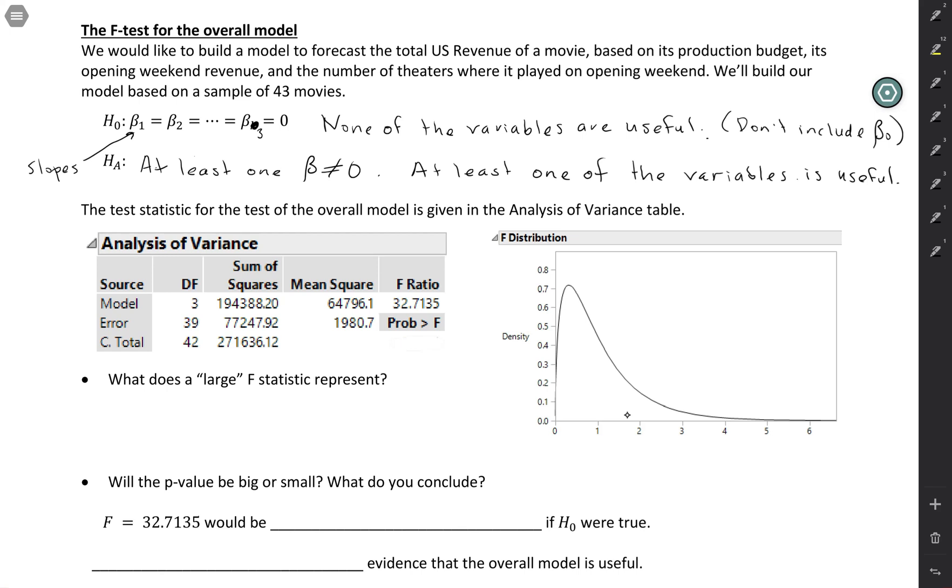So this output that is here is coming from JMP, and specifically it would be coming from Analyze Fit Model. We have to use Fit Model in cases like this where we have more than one explanatory variable. And this includes the analysis of variance table, which has a test statistic in it. So this F ratio here, this is our test statistic.